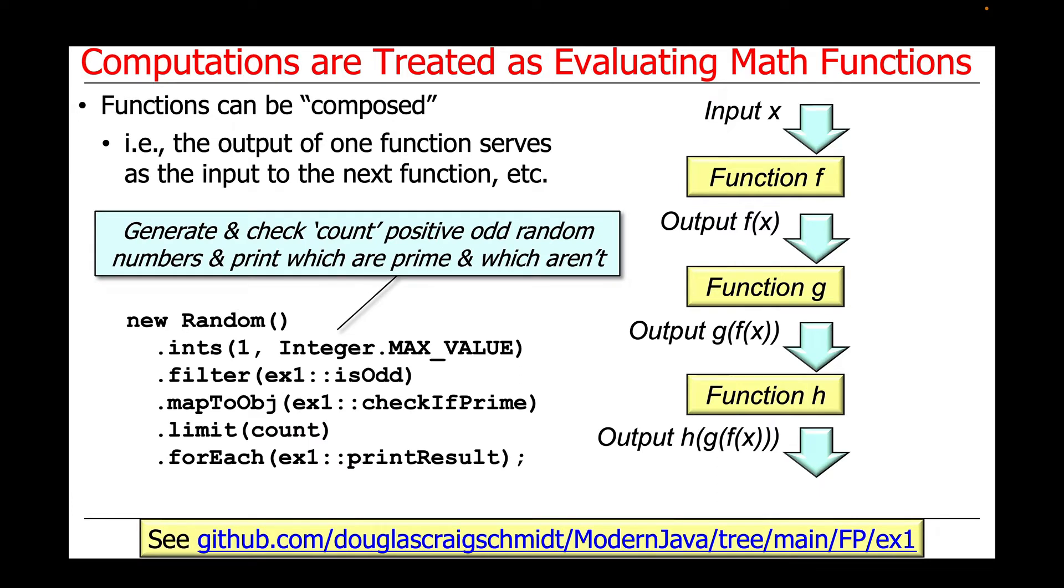We'll be taking a look at a case study example, EX1, which will generate and check count positive odd random numbers and print which are prime and which aren't.